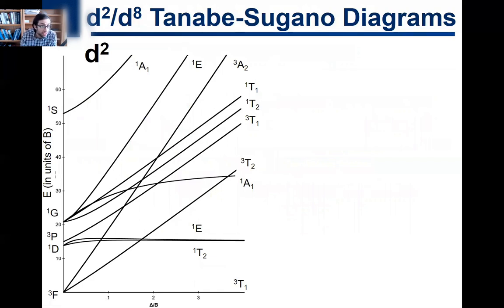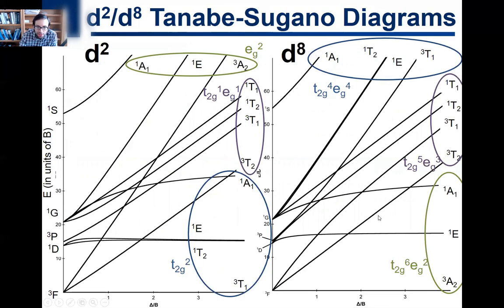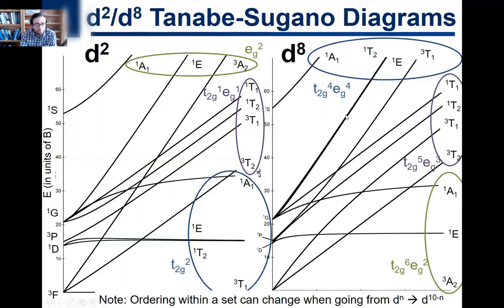Here's an example with D2 and D8. For D2, the four terms from the T2G squared electron configuration appear in a certain order. Looking at D8, these are switched. The EG squared terms that were highest in energy in D2 — singlet A1, singlet E, triplet A2 — are now lowest. The middle purple terms stay in the middle. The bottom ground state terms are now up high. Note that within any one of these sets, the ordering can also change going from Dn to D10 minus N.